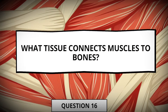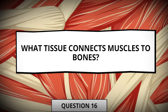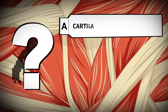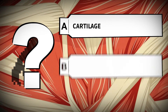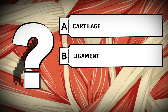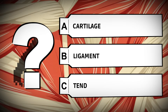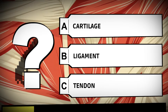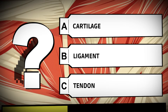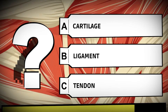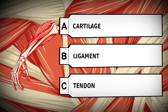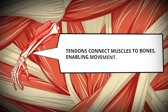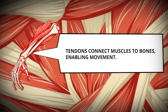What tissue connects muscles to bones? Tendons. Cartilage. Ligament. Tendons connect muscles to bones, enabling movement.